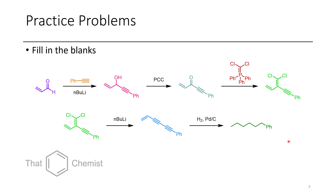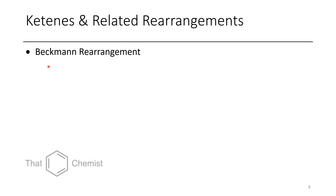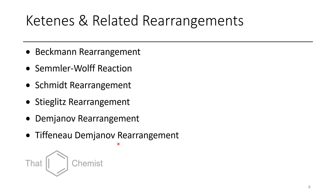This is a lot of work to just get hexylbenzene, but the point is that proper hydrogenation will just hydrogenate all of it. Now let's get to today's material: Aza-Baeyer-Villiger reactions and related reactions. None of them are actually called Aza-Baeyer-Villiger because they all have unique names depending on the slight variance. The common theme today is nitrogen-based 1,2-shifts. The reactions we'll discuss include the Beckmann rearrangement, the Semler-Wolff reaction, the Schmidt rearrangement, the Stieglitz rearrangement, the Demjanov rearrangement, and the Tiffeneau-Demjanov rearrangement.